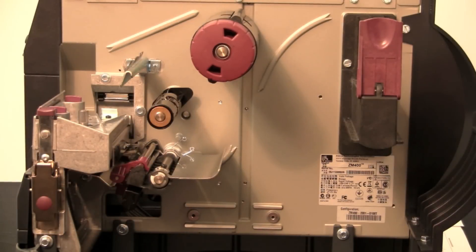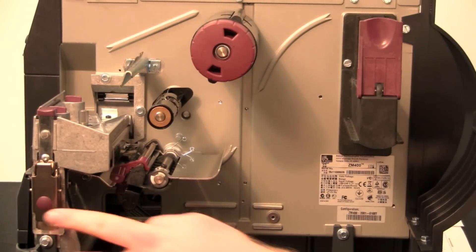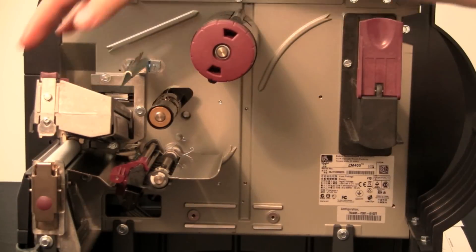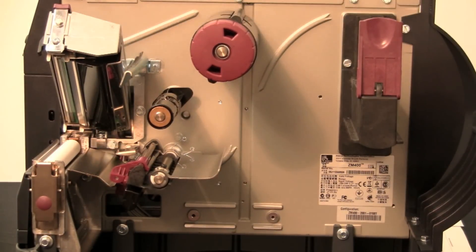To load roll media on a ZM400 printer, press the printhead release latch and open the printhead assembly. Lift the printhead until it latches open.